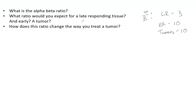How does that ratio change the way you treat a tumor? For a high alpha-beta ratio tumor, you want to fractionate in order to reduce late effects. For a low alpha-beta ratio tumor, fractionation actually allows the tumor to repair and impairs the effectiveness of treatment. These are key considerations with the alpha-beta ratio.